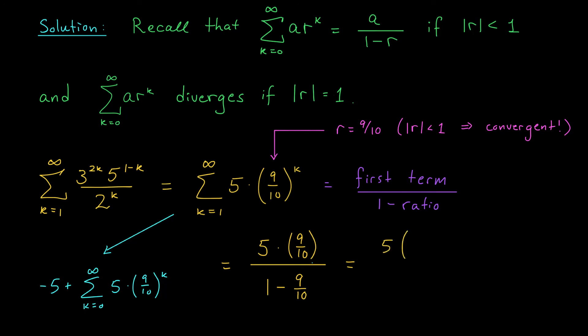If I simplify this, I have 5 times 9 tenths divided by 1 tenth. That leaves me with 5 times 9, and I have a final answer of 45.